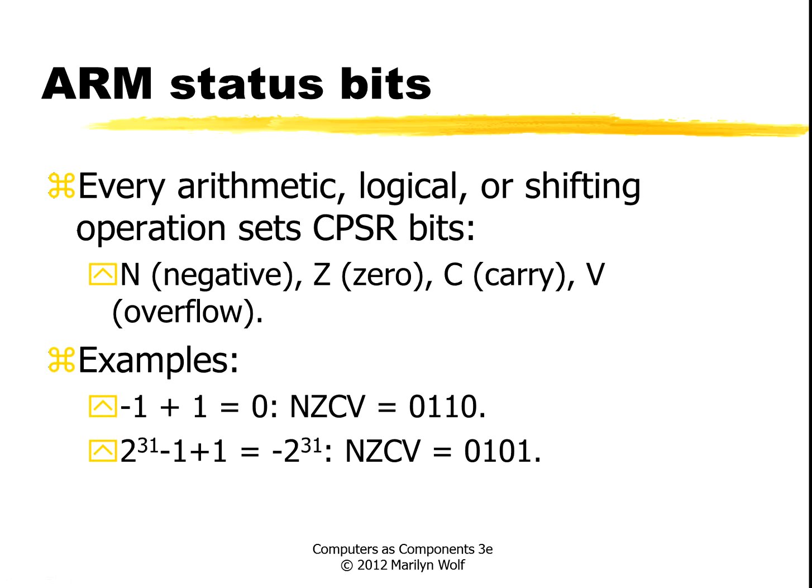Every arithmetic, logical, or shifting operation sets the negative, zero, carry, and overflow bits. These have fairly standard interpretations. For example, if we add negative 1 and 1 to get 0, the NZCV bits look like this. If we take 2 to the 31 minus 1 and add 1, the NZCV bits look like this.